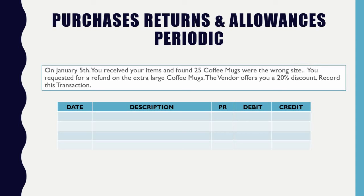The vendor offers you a 20% discount and you accept it. Let's record this transaction. On January 1st I already purchased 100 cups, and now a couple days later I'm trying to return 25 of them, but they convinced me to keep them and only take a 20% discount.